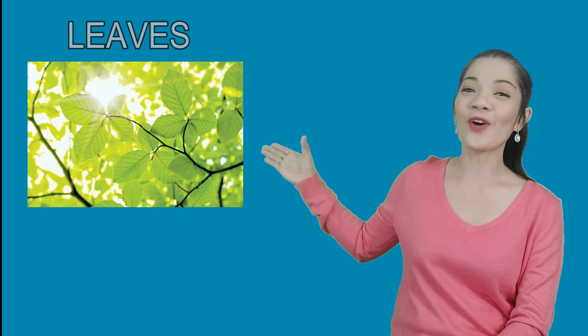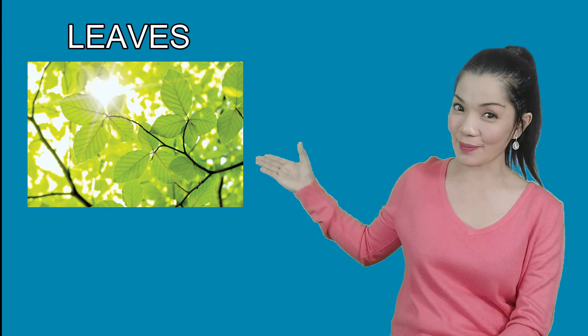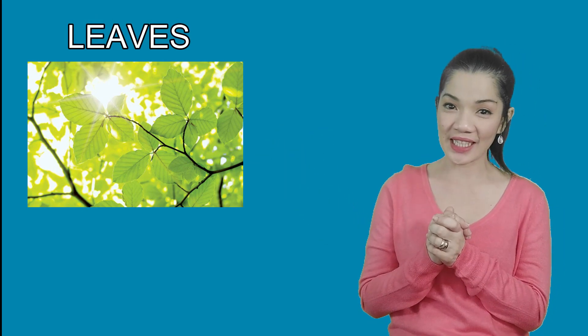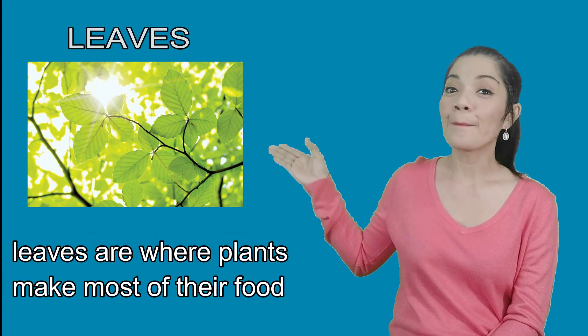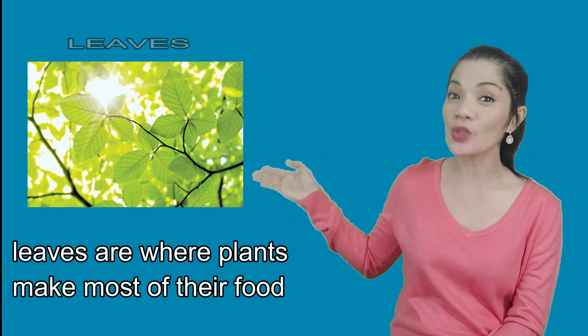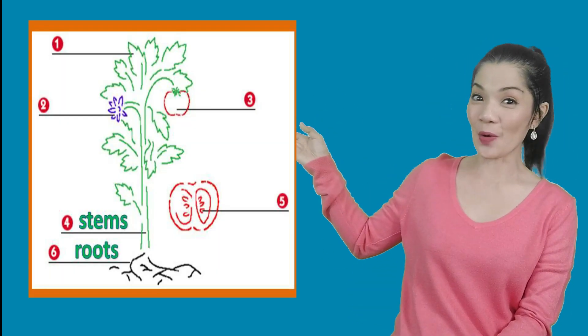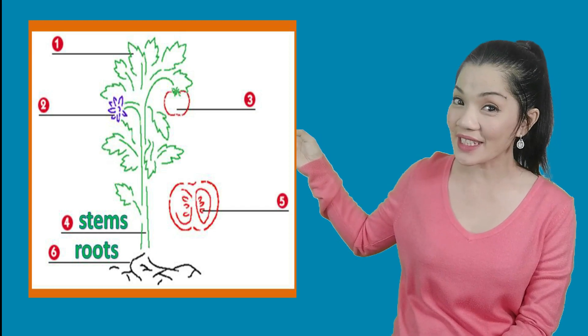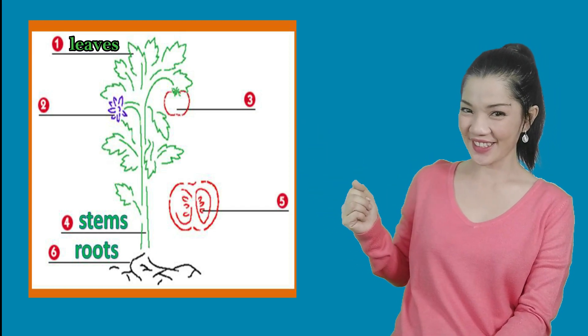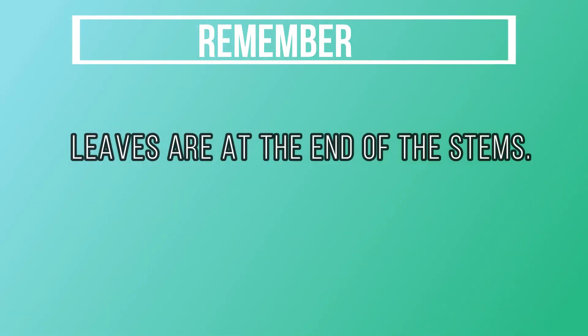The next part of the plant we're gonna learn today are the leaves. The leaves are on the end of the stems of plants. Leaves are where plants make most of their food. Leaves take in air and they use air, water, and sunlight to make food. Can you tell me which part of the plant are leaves? Remember, leaves are at the end of the stems.